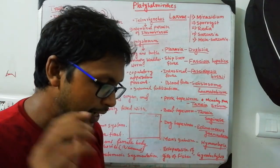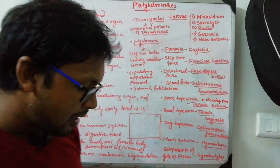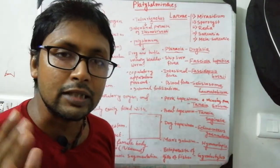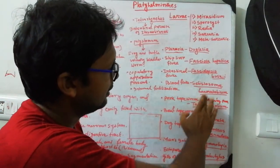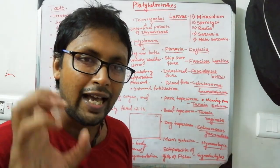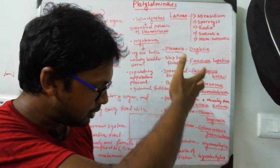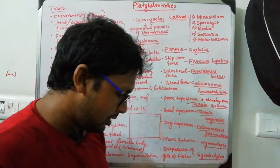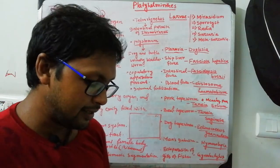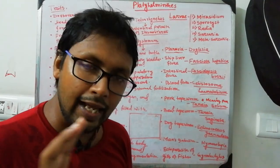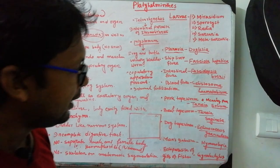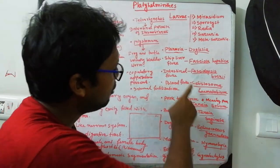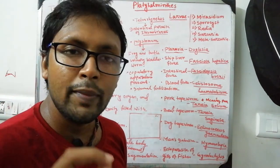Schistosoma haematobium is the endoparasite of the hepatic portal system, and the female lives in the male's abdominal cavity as mentioned. It contains an oral sucker and acetabulum - this term is very important. Schistosoma haematobium has an acetabulum. Its blood fluke life cycle requires a snail (Oncomelania) and human beings - so the life cycle moves through the snail Oncomelania and human beings.